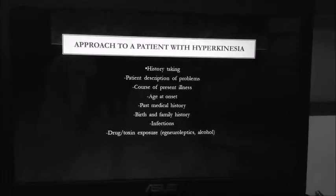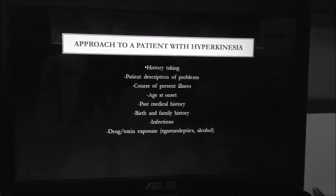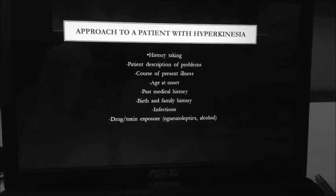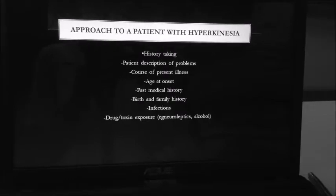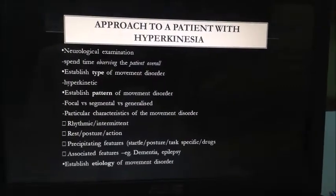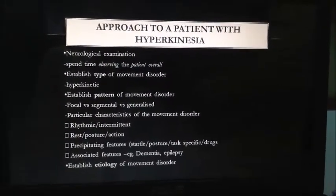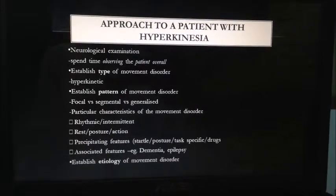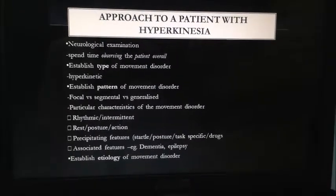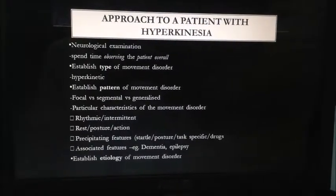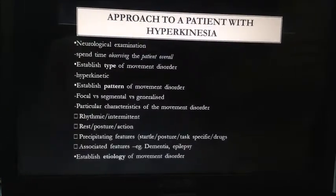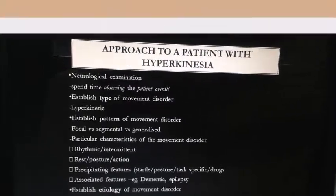The approach to a patient with hyperkinesia requires history-taking: patient description of problems, course of present illness, age of onset, past medical history, birth and family history, infections, and drug or toxin exposures. Neurological examination involves spending time observing the patient overall, then establishing the type of movement disorder such as hyperkinetic, then establishing the pattern — focal vs. segmental vs. generalized — and particular characteristics such as rhythmic or intermittent, rest, posture, or action, and precipitating features such as startle.